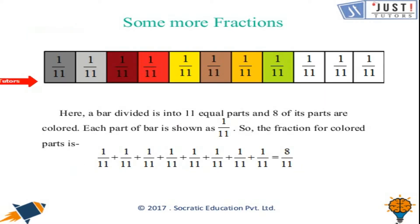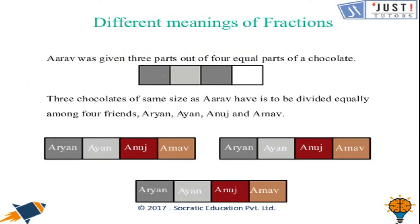Here the total bar is divided into eleven equal parts. If we talk about one part, it will be one over eleven. If we talk about the fraction that is colored, we say eight over eleven, because eight bars are colored here.